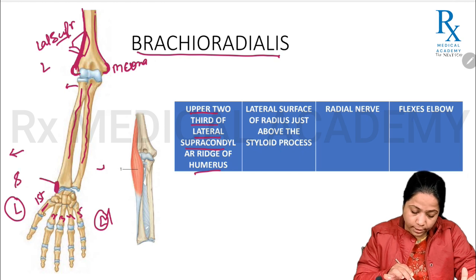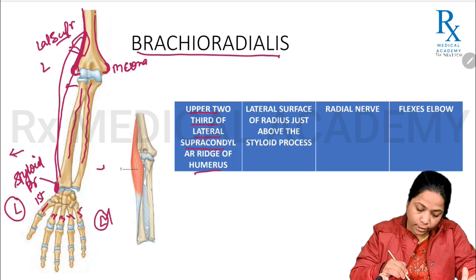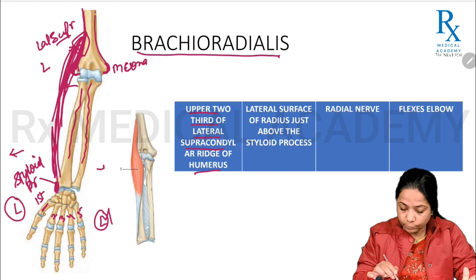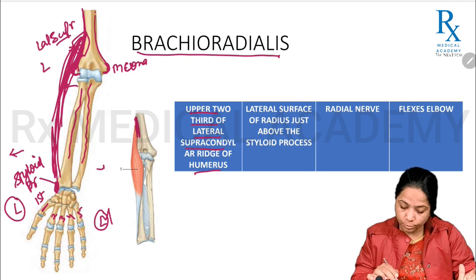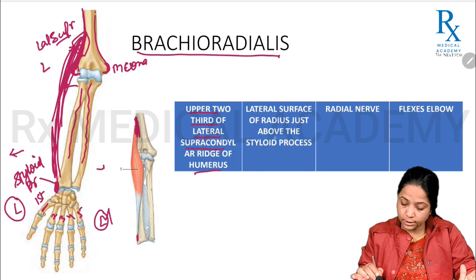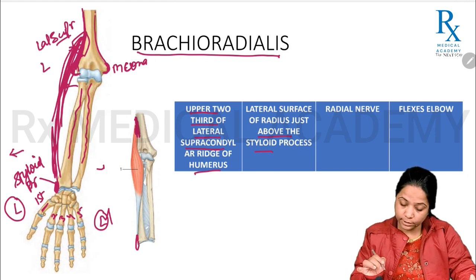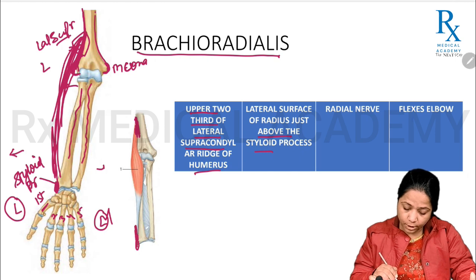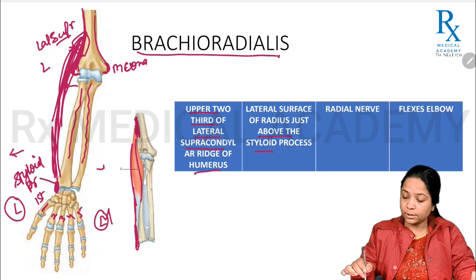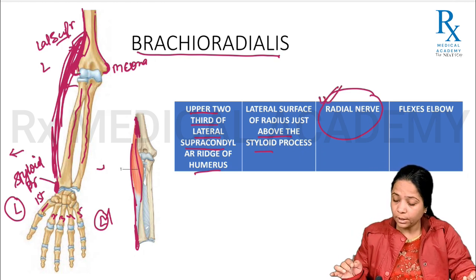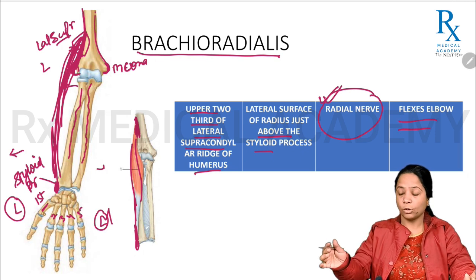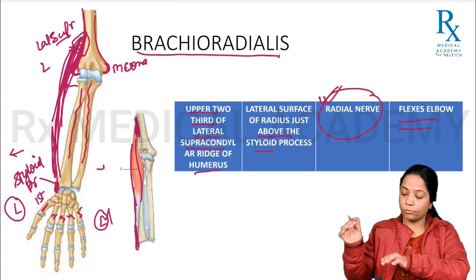Brachioradialis inserts just above the styloid process of the radius. The styloid process is a projection at the lower end of the radius bone. In this diagram you can clearly see the origin point from the upper two-thirds of the lateral supracondylar ridge and the insertion just above the styloid process of the radius. This muscle is supplied by the radial nerve, and its function is to produce flexion of the elbow joint.